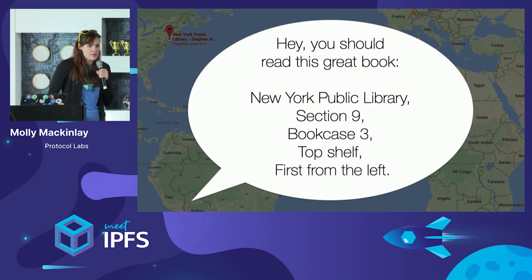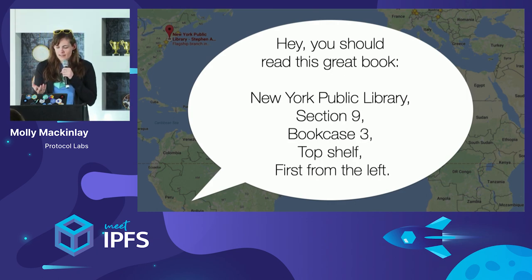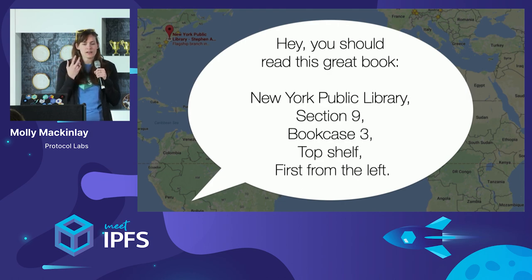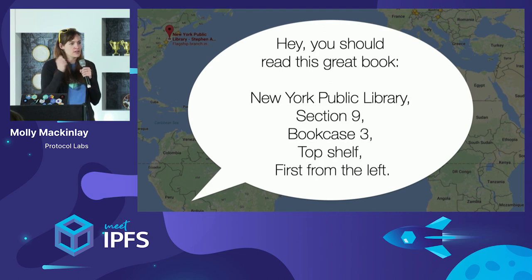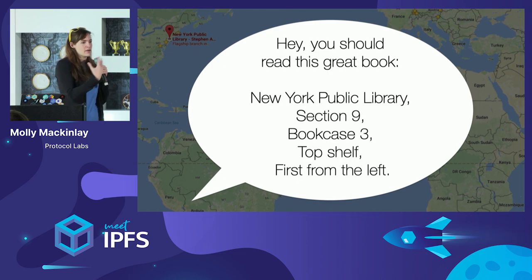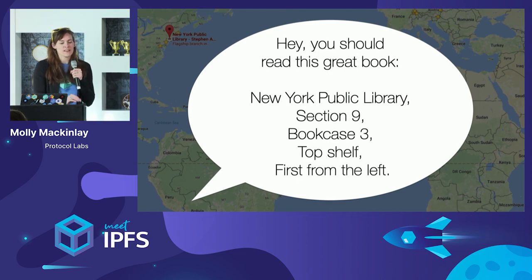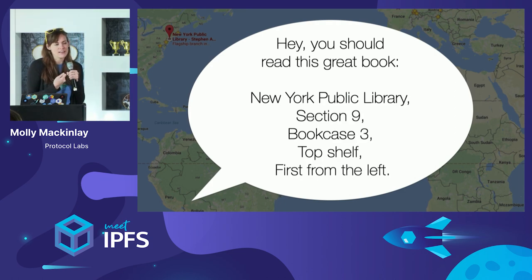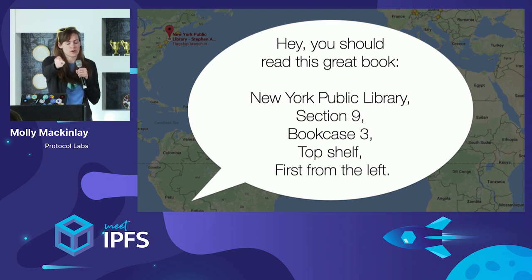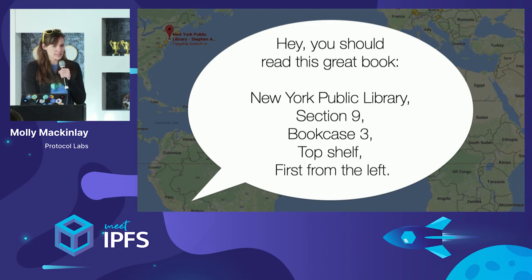An example I love for how IPFS works versus the central location-addressed model: imagine someone has told you to go read a book, but instead of telling you what book it is, they've told you to go to the New York Public Library, section 9, bookcase 3, top shelf, first from the left. So you travel to New York, maybe the library is closed, you wait a day, you go fetch it — and then you realize you had that book in your backpack the whole time. You didn't know because you didn't know the content of the book you were looking for. You had to know where to go look for it. IPFS enables a much more resilient model of finding content.